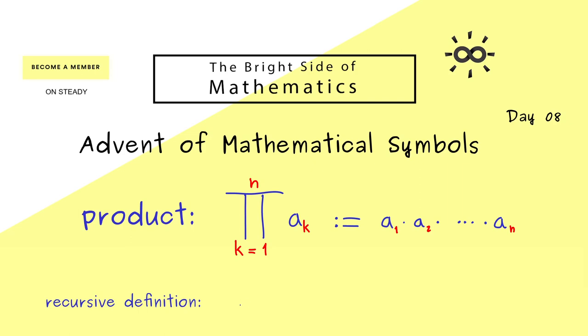This means that we first have to explain what the empty product should be. In other words, what happens when we set n to 0. Then the explanation from above does not make any sense because there are no numbers involved. Indeed, the only meaningful thing would be to set the empty product to 1, because when we multiply with 1 we don't change anything.